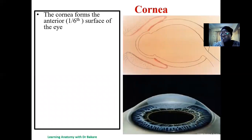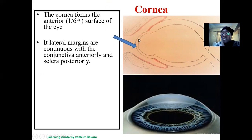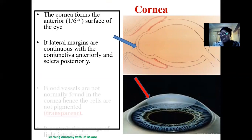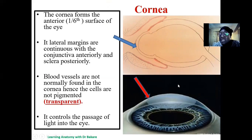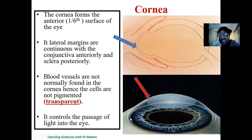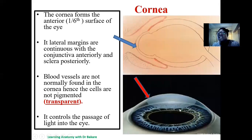The cornea forms about one-sixth of the entire surface of the fibrous tunic and is an anterior extension of the sclera. The cornea is transparent because it is non-pigmented, which allows easy penetration of light rays. This is where we have the iris and the pupil beneath it. If the cornea were pigmented, light rays may not be able to pass through. So light rays can pass through the cornea and enter into the pupil to go into the interiors of the eye, where further processing will occur.